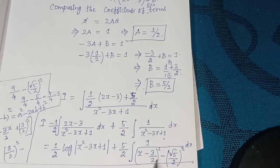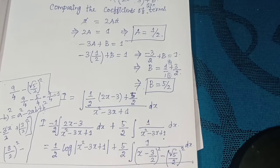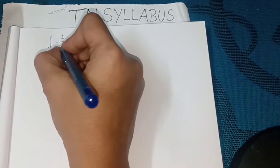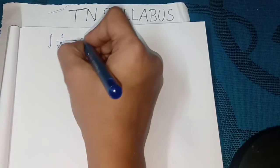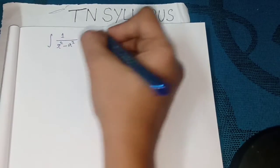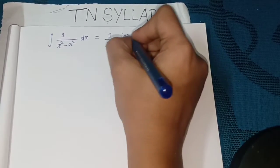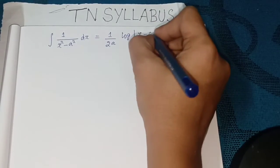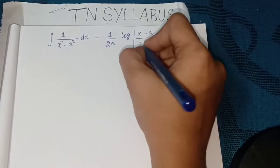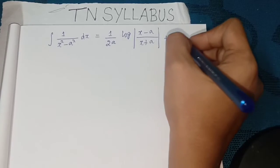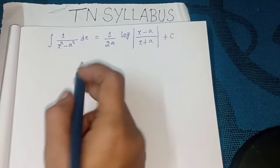This is of the form integral of 1 divided by (x² - a²) dx. The formula is: integral of 1/(x² - a²) dx = 1/(2a) log |(x - a)/(x + a)| + c.